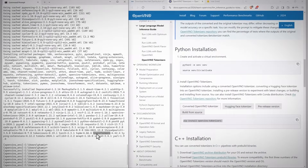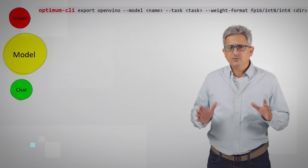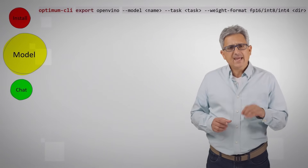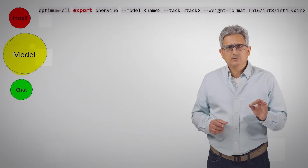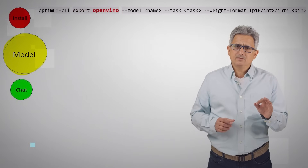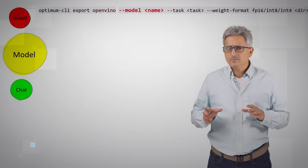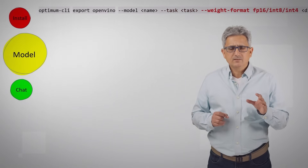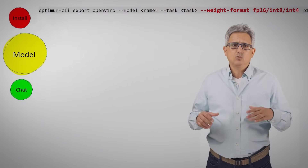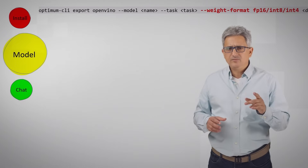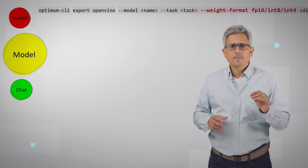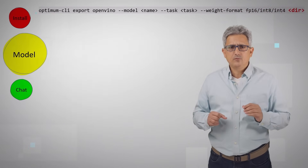And we are all set. Let's grab a model. This is the simplest way to get it — one line of code. Optimum CLI: export the model to OpenVINO format, provide the model name, task of the model, and weight format — FP16, INT8, or INT4. See my other video on model weights compression, and provide a directory for the model.